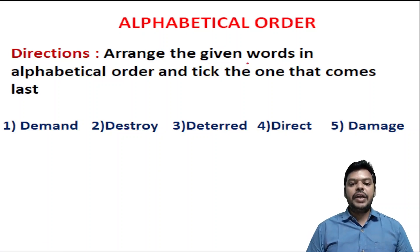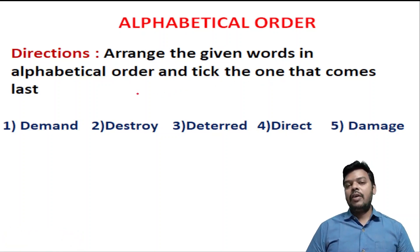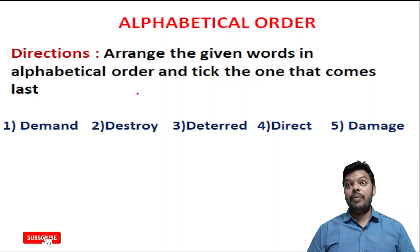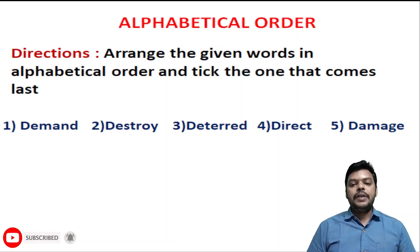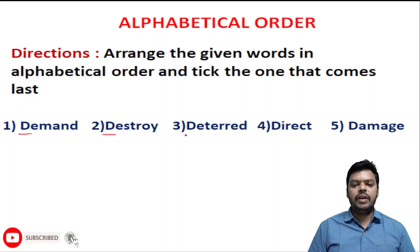Arrange the given words in alphabetical order and tick the one that comes last. Here all five words — first word D, second word D, third word D, fourth word D, and fifth word D — all start with the same letter D.